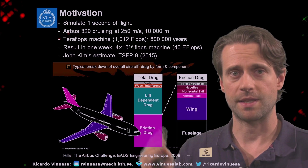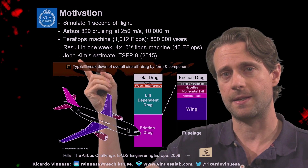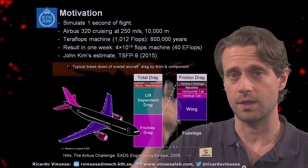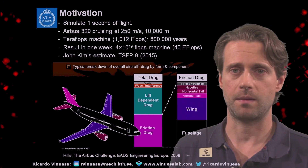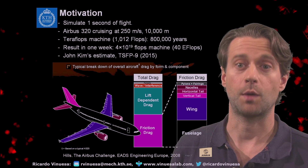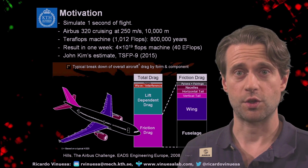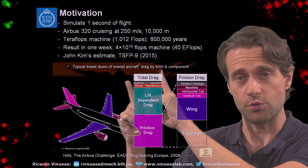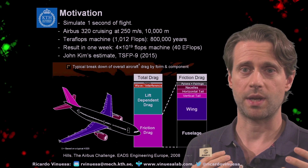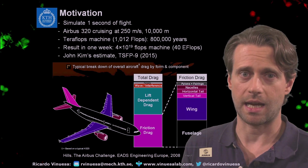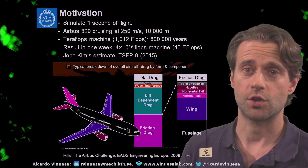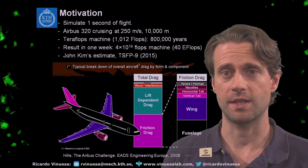These are estimates based on John Kim's work at TSFP, now about eight years ago. So currently there are perhaps a bit more optimistic estimates. Based on CPUs — and this is all based on CPUs — perhaps the area where we are experiencing much more potential nowadays is on GPUs, graphics processing units.